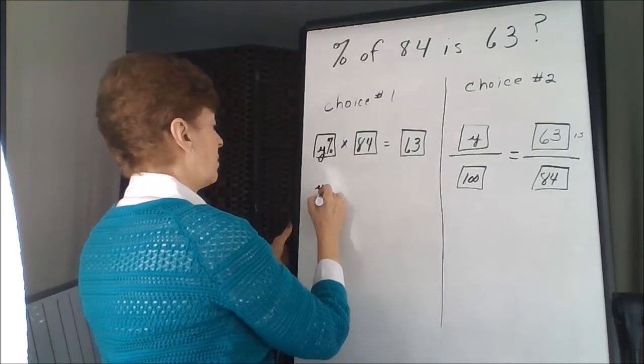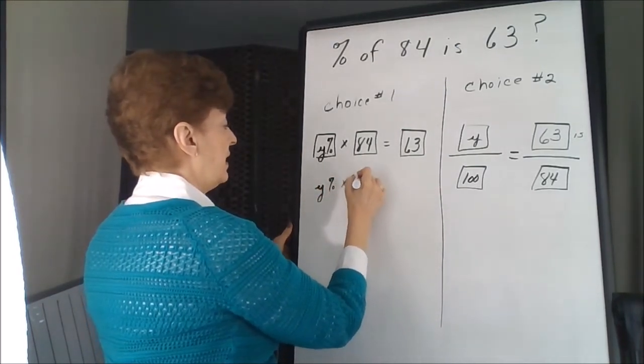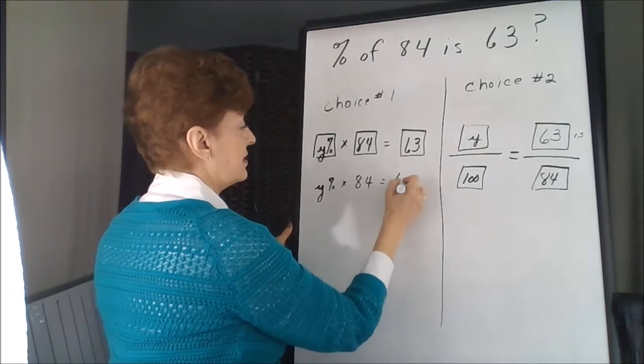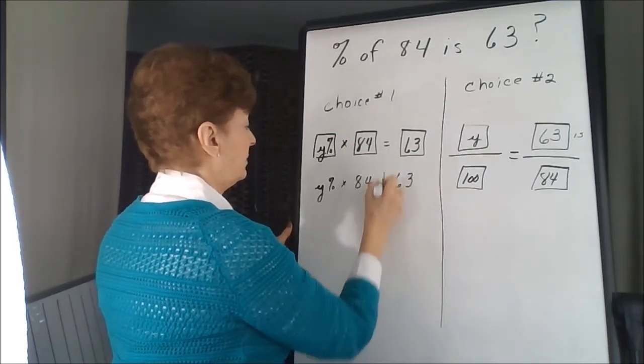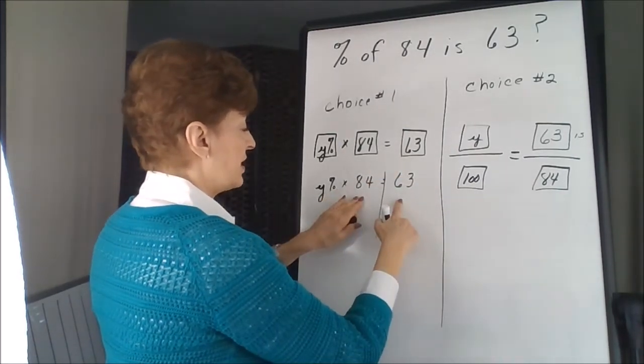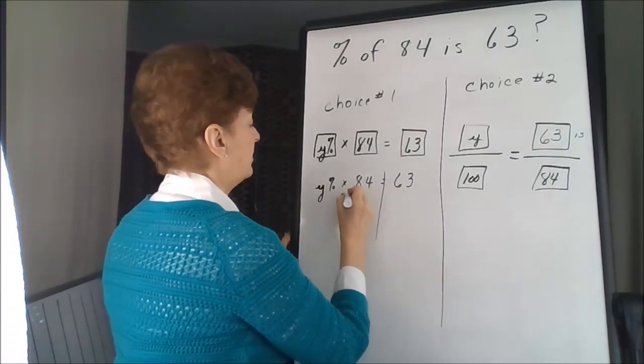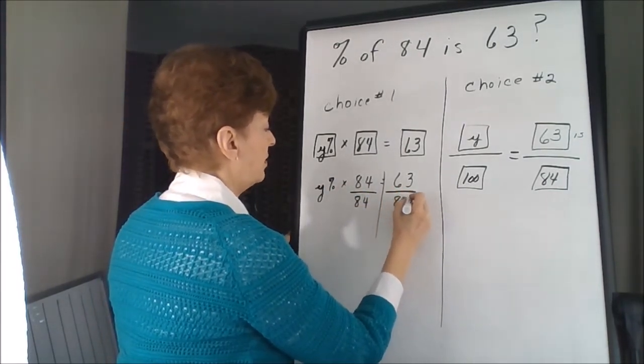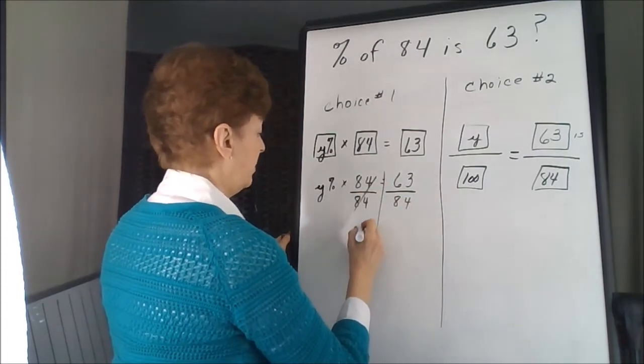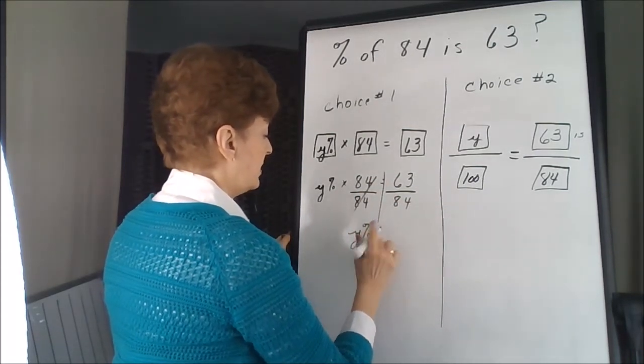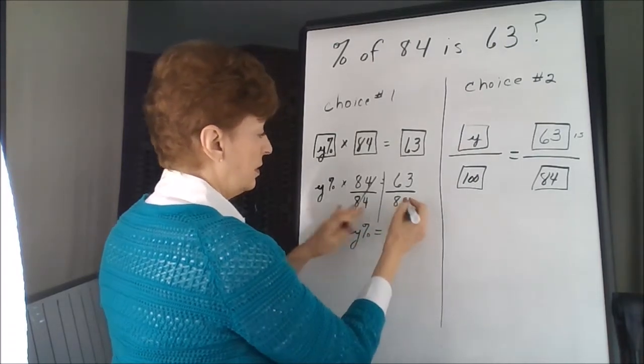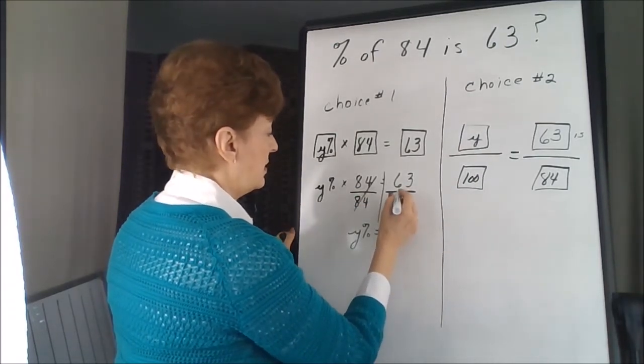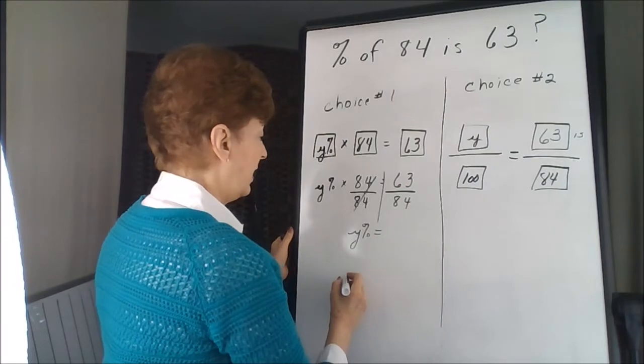So y percent times 84 is equal to 63. We have numbers on both sides of the equation. Divide by 84, divide by 84. Y percent is equal to 63 divided by 84.